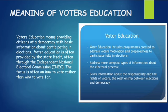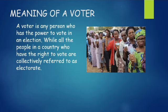Meaning of a Voter. A voter is anyone who has the power to vote in an election, while all the people in a country who have the right to vote are collectively referred to as electorates.